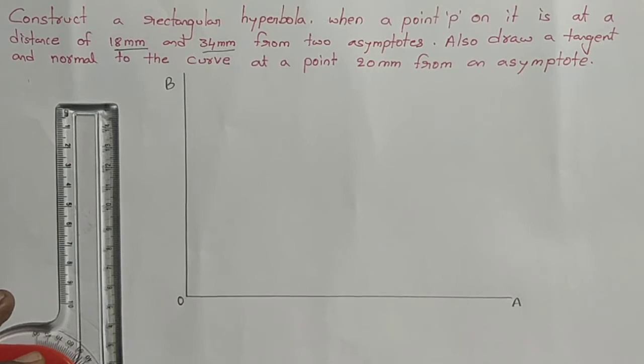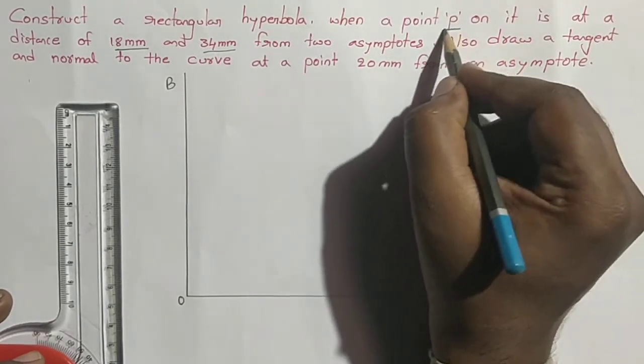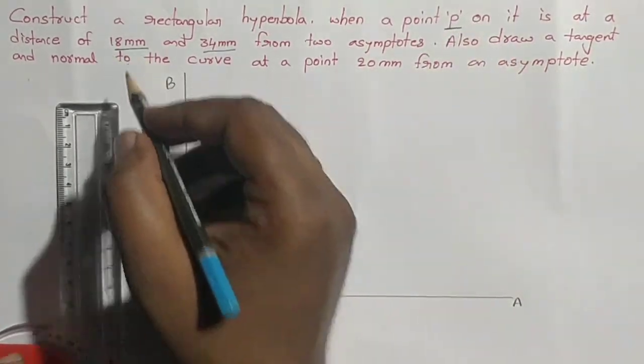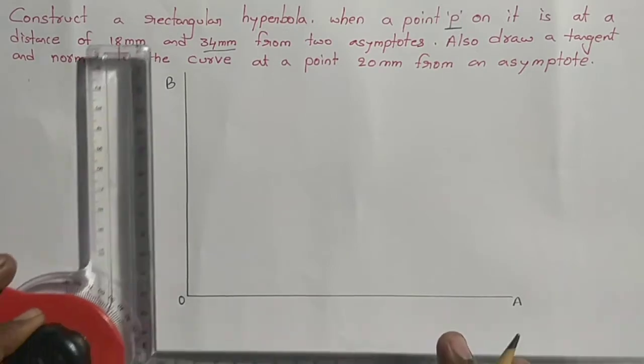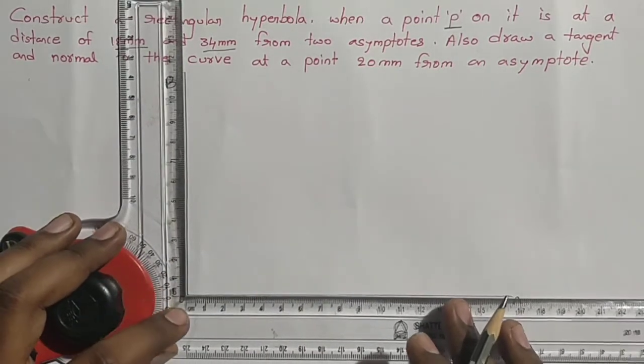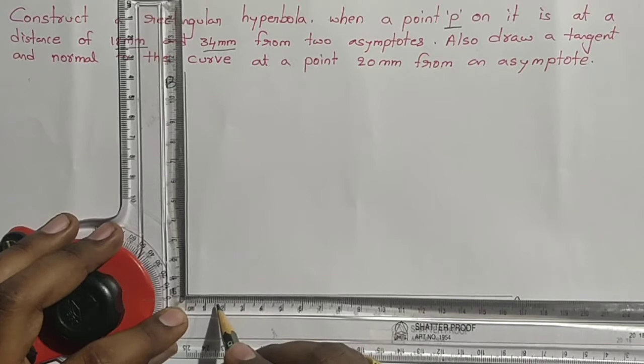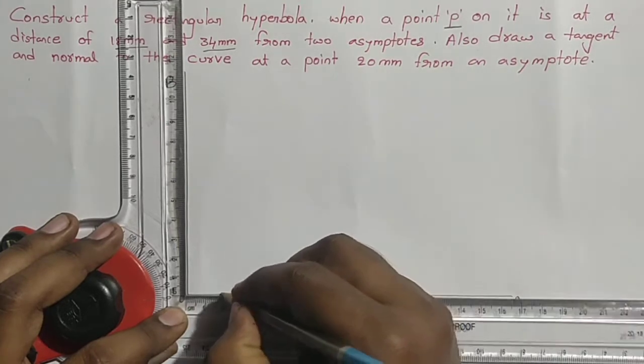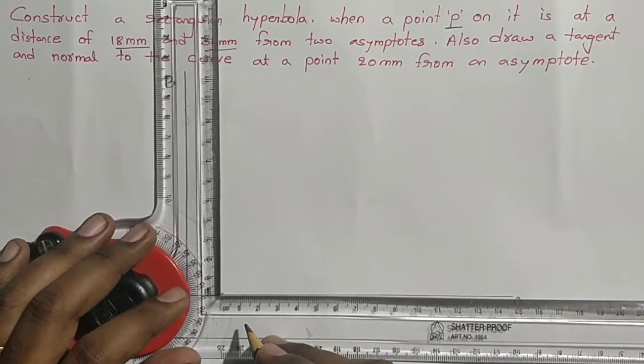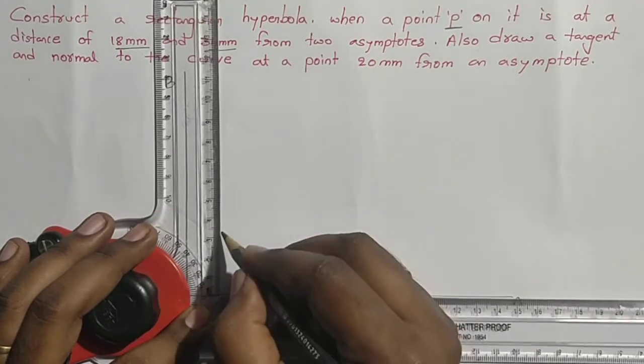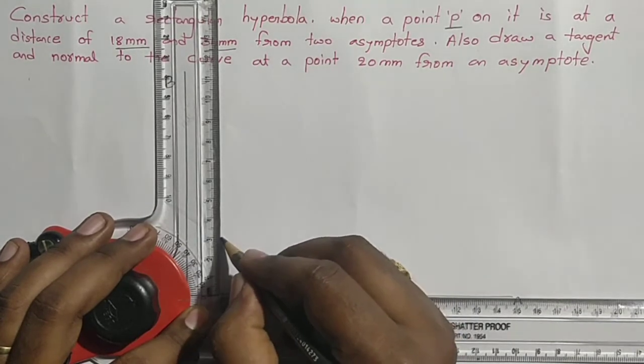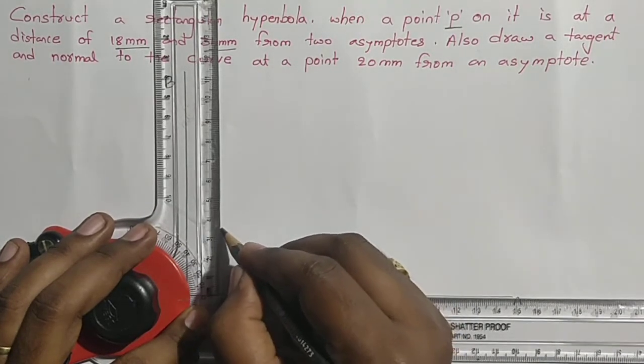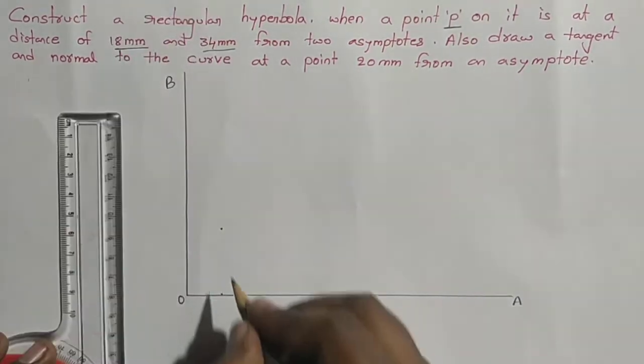Next we have to locate point P at a distance of 18mm on the x-axis and 34mm on the y-axis. I'm taking 18mm: 15, 16, 17, 18 at this point. On the y-axis we need to take 34: 10, 20, 30, 35 minus 1 equals 34. This is point P.